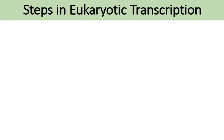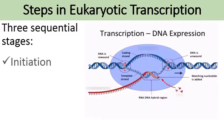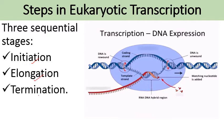The next steps involved in eukaryotic transcription are similar to prokaryotes: there are three steps — initiation, elongation, and termination.